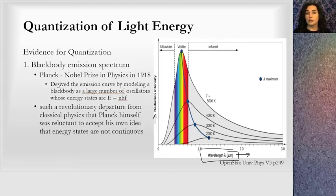What Planck won his Nobel Prize for was deriving this emission curve by modeling a black body as a large number of oscillators whose energy states, so I think about a star, I think about it having just a bunch of springs in it, an oscillator. And the energy of those springs as they oscillate are given by very specific quantified values.